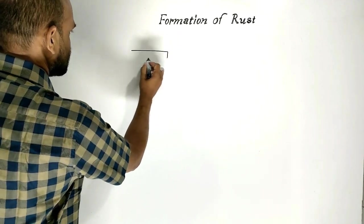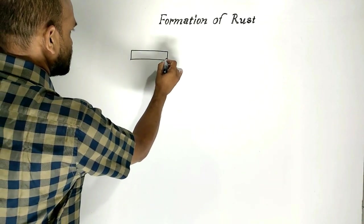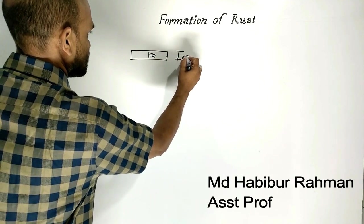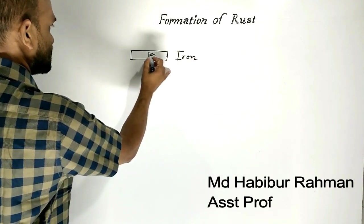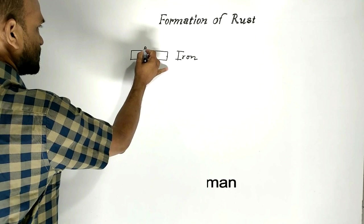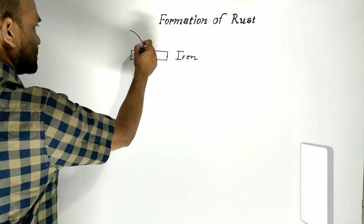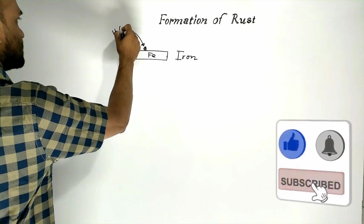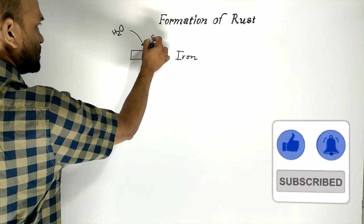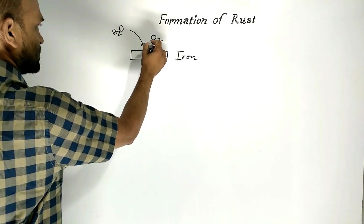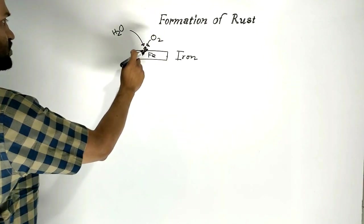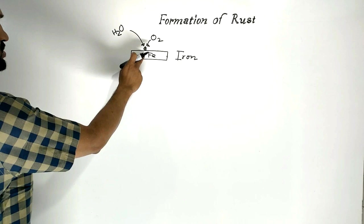Suppose this is metal, iron. Here, water. Oxygen. Oxygen participates in rust formation.